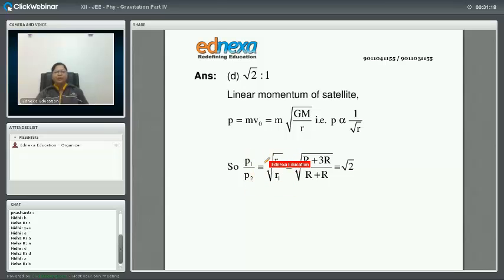P1 upon P2 is equal to √(R2/R1). R2 is taken to be R plus 3R, and R1 is taken to be R plus R. So this will be 4R upon 2R, which gives you an answer of √2:1.